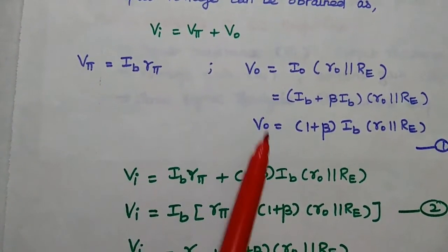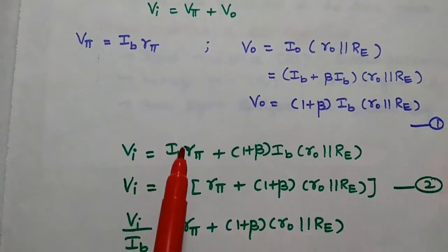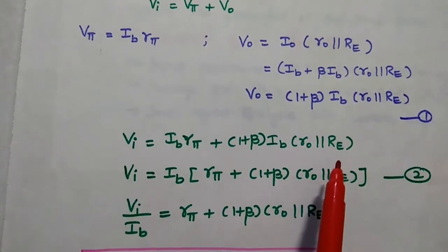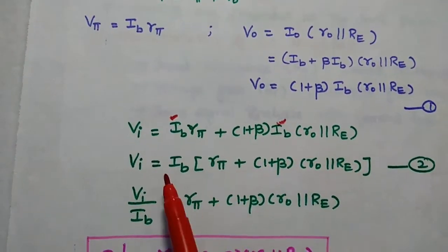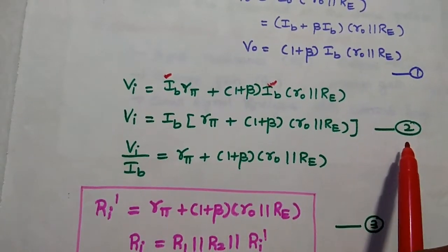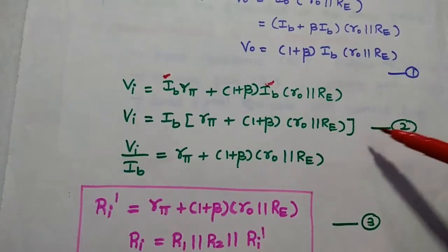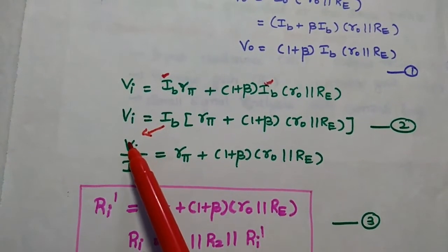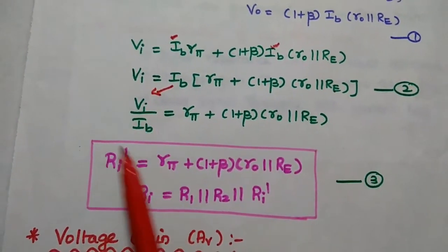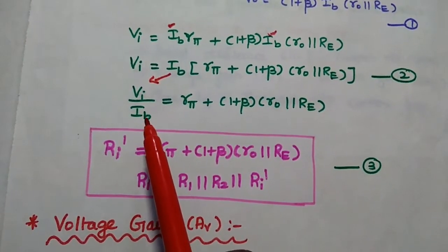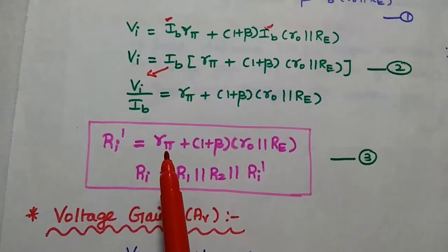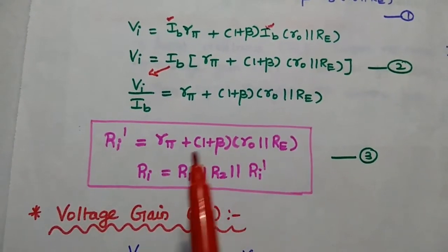Substituting the values of Vpi and Vo, Vi equals Ib·Rpi plus (1 + Beta)·Ib·(Ro parallel Re). Taking Ib as a common factor, Vi equals Ib·[Rpi + (1 + Beta)·(Ro parallel Re)]. Therefore, Vi/Ib — which is Ri dash — equals Rpi plus (1 + Beta)·(Ro parallel Re). The overall input resistance Ri equals R1 parallel R2 parallel Ri dash. This is the input resistance of the CC amplifier.